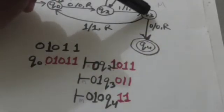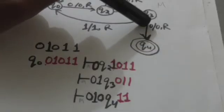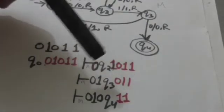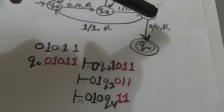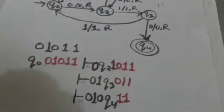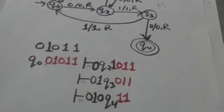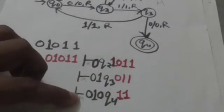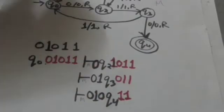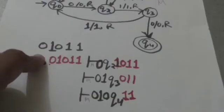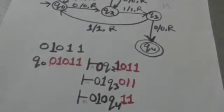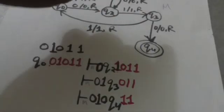Now Turing machine M is in state Q3 and has to read the symbol 0. When the Turing machine M is in state Q3 and reads the symbol 0, it jumps to state Q4, which is the final state. It replaces the symbol 0 by 0 and moves its head one position to the right. The Turing machine comes into this new configuration and is now in its final state, so it halts. The string 01011 is accepted by this Turing machine M.